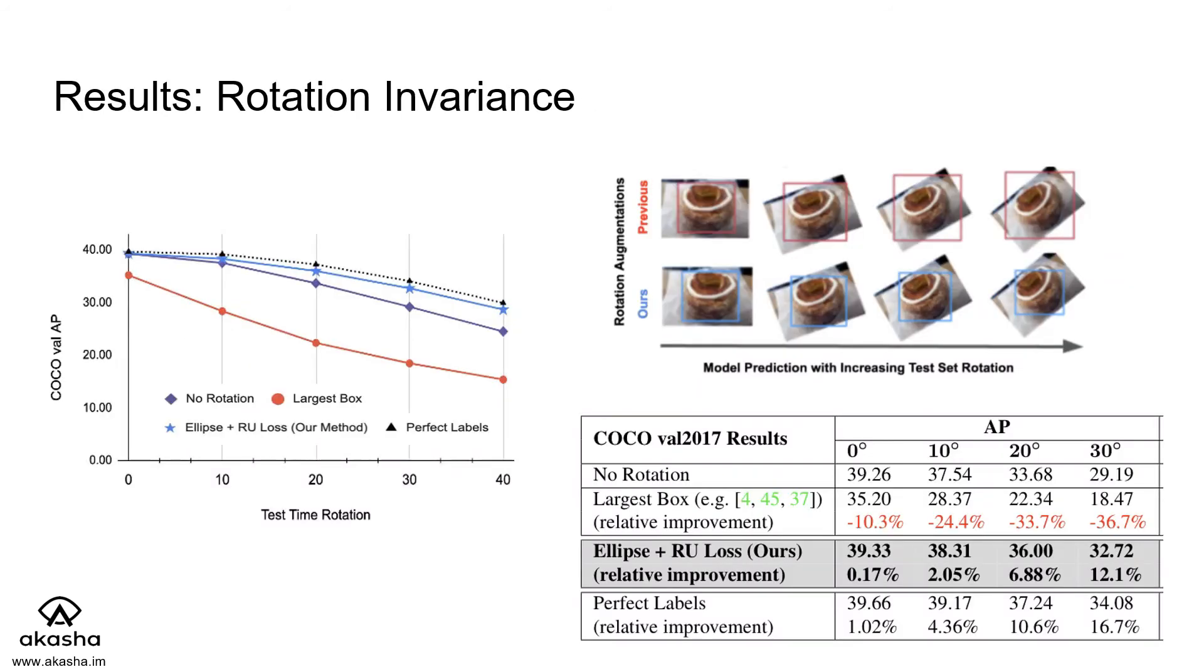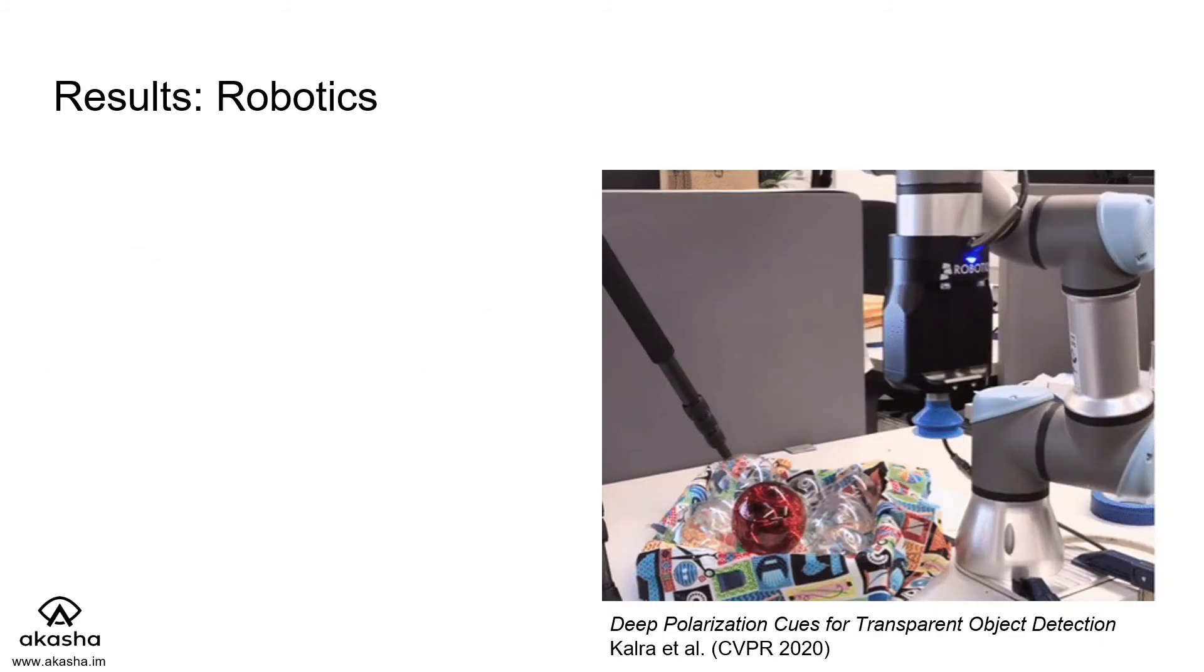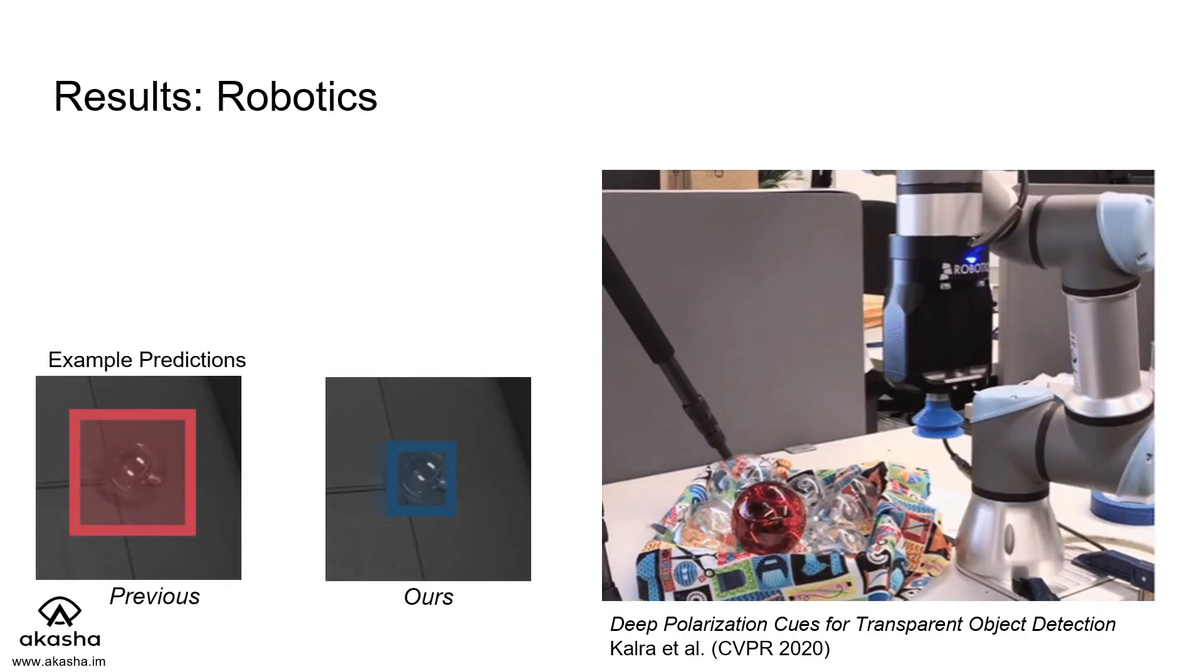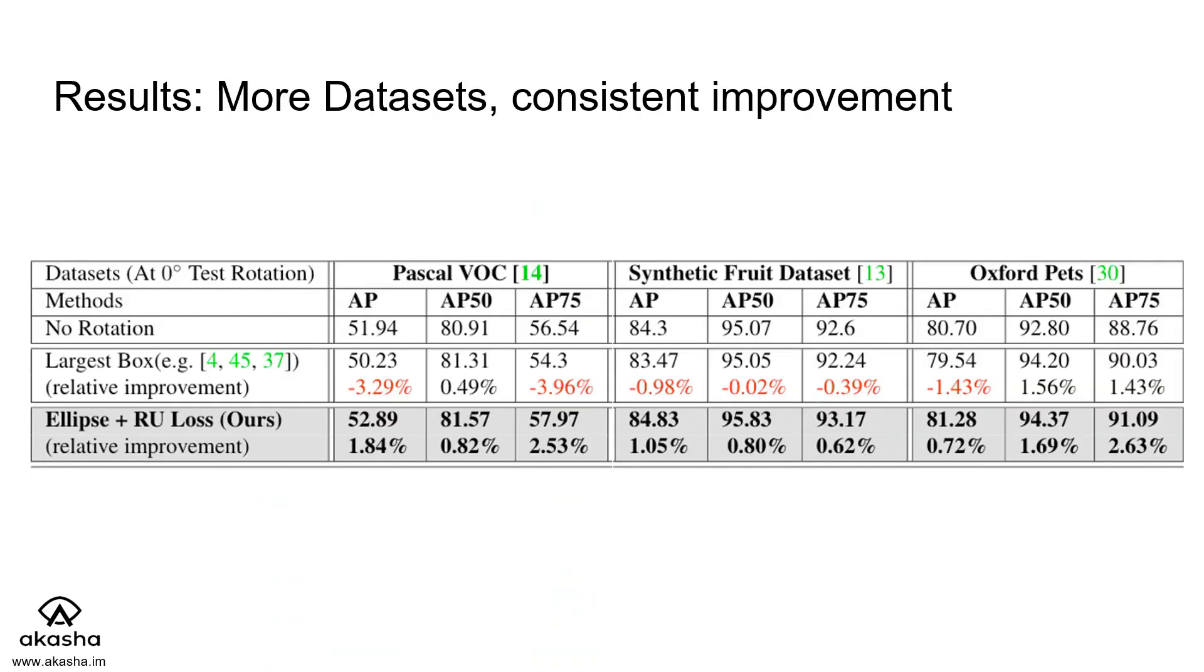When we look at the results on MS COCO, we find that our method improves performance at every rotation and leads to much tighter boxes. When we look at the performance on the robotics dataset, we find that our method leads to an improvement across the board. Testing on other datasets shows similar results and noticeable improvement in performance.